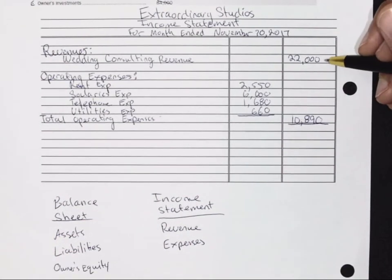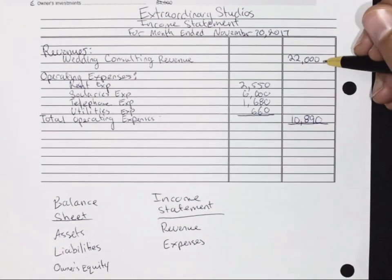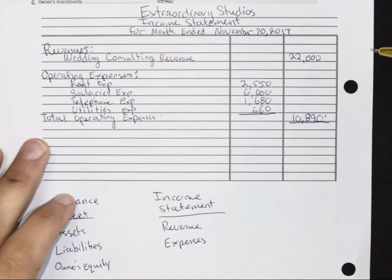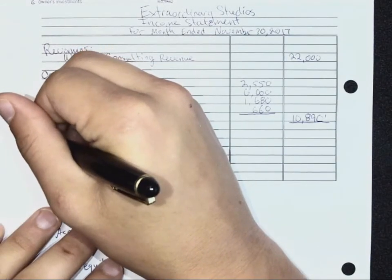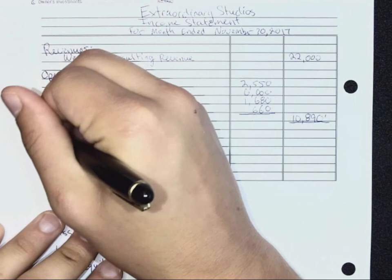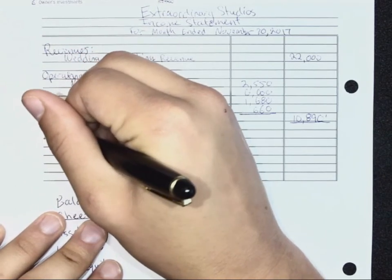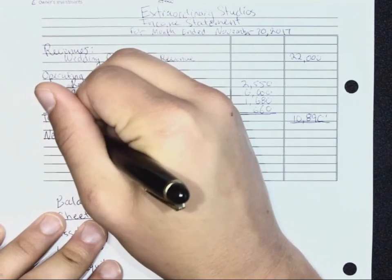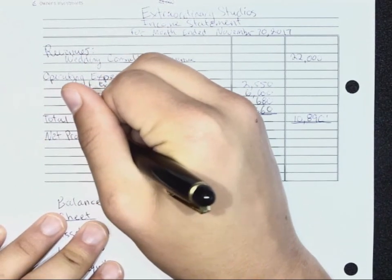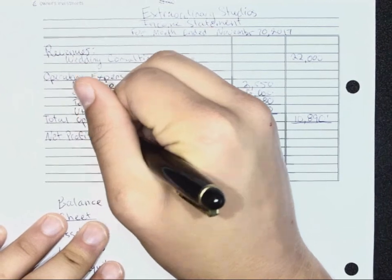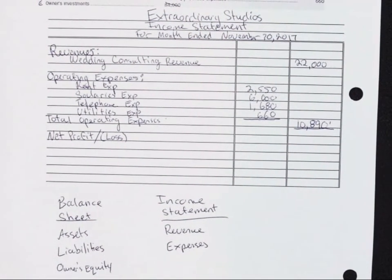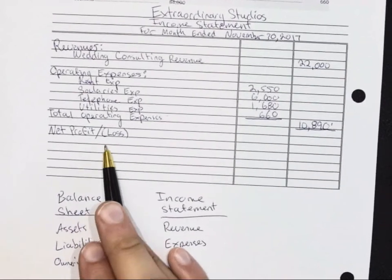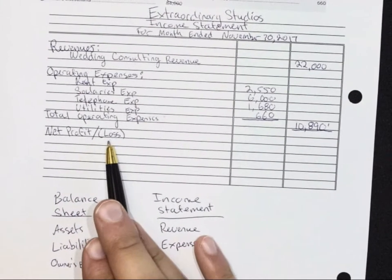So we have our total revenue, we have our total expenses, and that gives us our net profit — or loss shown in brackets.